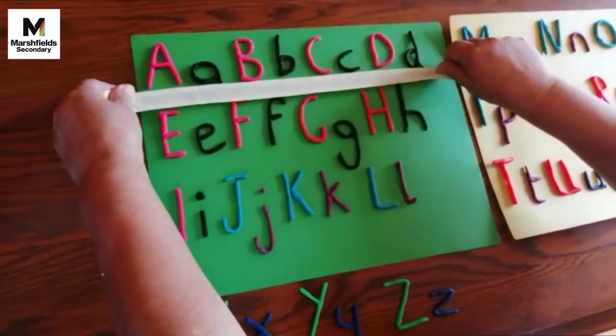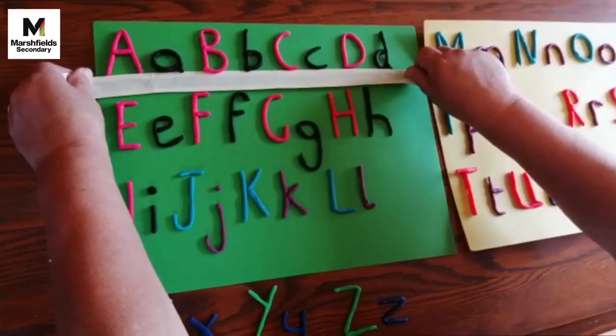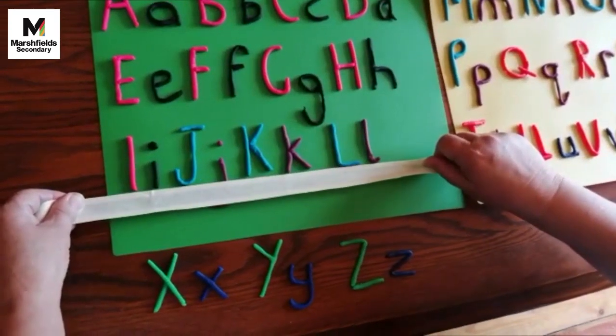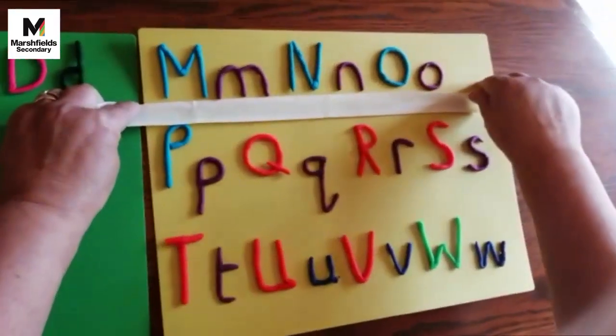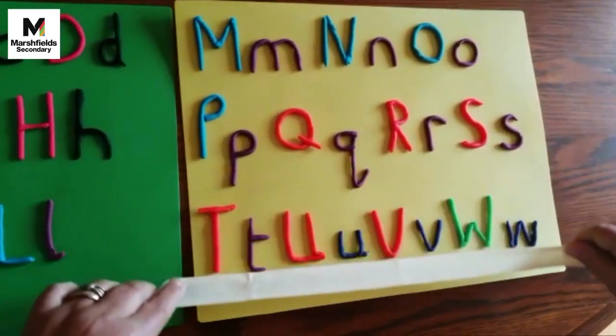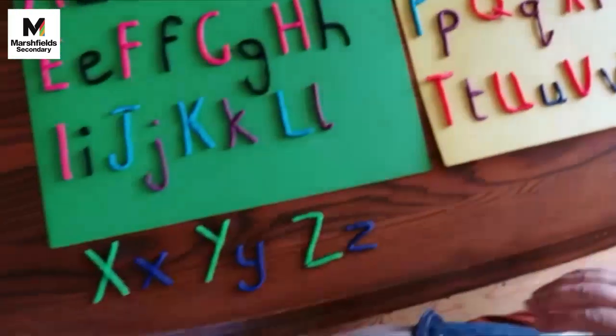here you can see which ones sit on the line and which ones hang down. Now the other thing is with our tall stick letters, we make our sticks straight. They're all straight, pointing upwards.